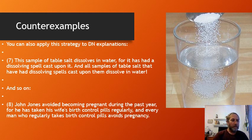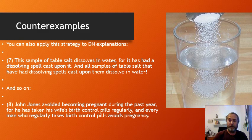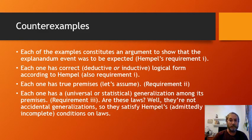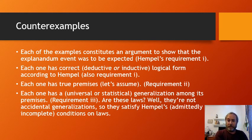A third example: 'John Jones avoided becoming pregnant during the past year because he took his wife's birth control pills regularly, and every man who regularly takes birth control pills avoids pregnancy.' True premises, valid deductive argument, nothing left out — yet obviously a bad explanation. He's a man; that's the real explanation.